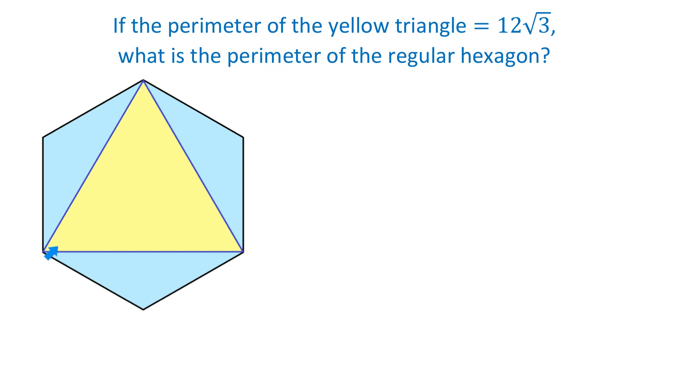If the perimeter of this triangle is 12 square root of 3, then to find one side we will divide the perimeter by 3. 12 square root of 3 divided by 3 is 4 square root of 3. So each of these sides of the yellow triangle is 4 square root of 3.